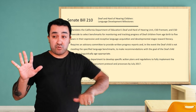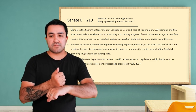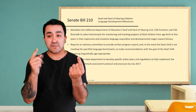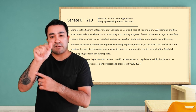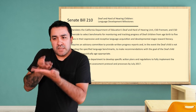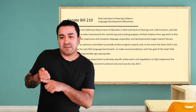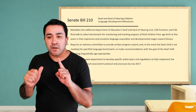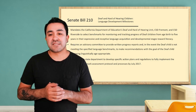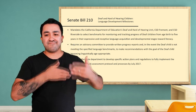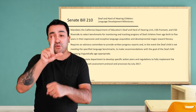The law required an advisory committee to provide progress reports of the child's language acquisition and literacy development. If the child is not meeting the specified language benchmarks, the committee is to make recommendations with the goal of the deaf child becoming linguistically age appropriate. Lastly, it also mandated the State Department to develop specific action plans and regulations to fully implement the Language Benchmark Assessment Protocol and Processes by July 2017.